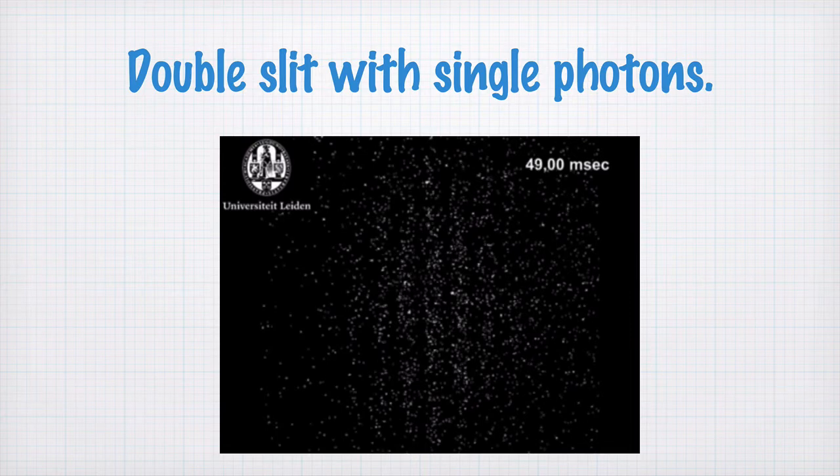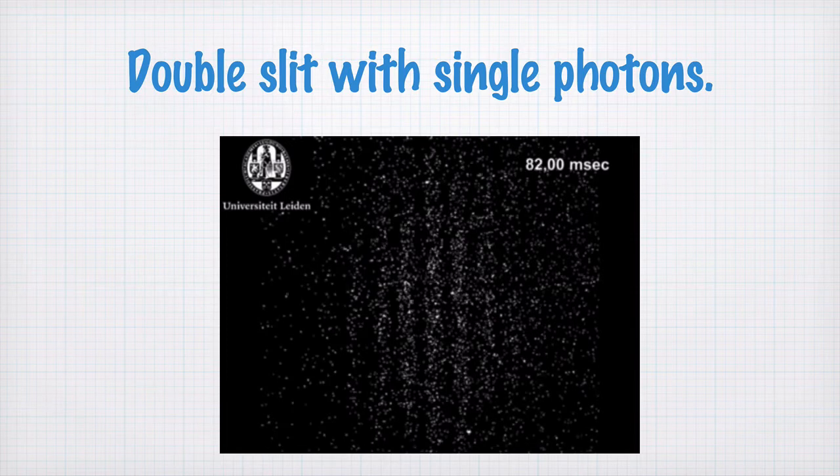Because the photon, when it passes through the slits, it's behaving like a wave, and yet when it's detected on the CCD, it's behaving like a particle.